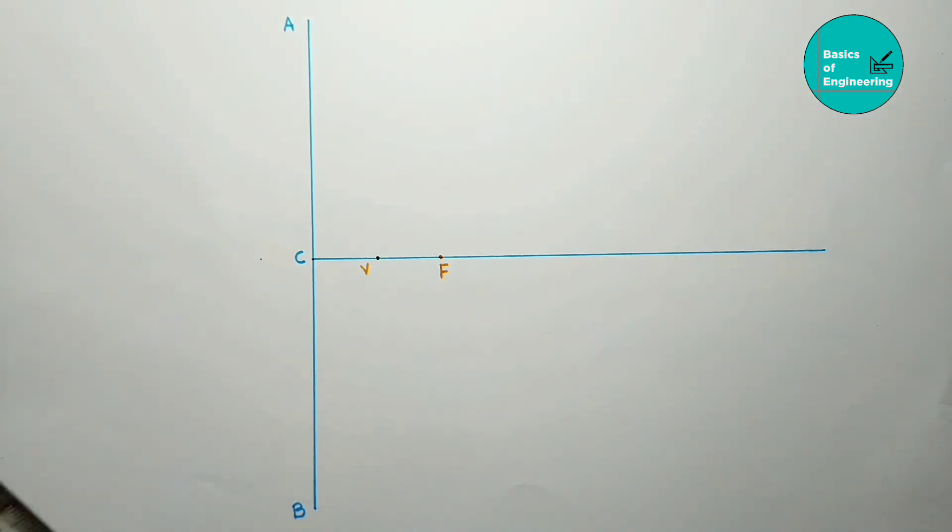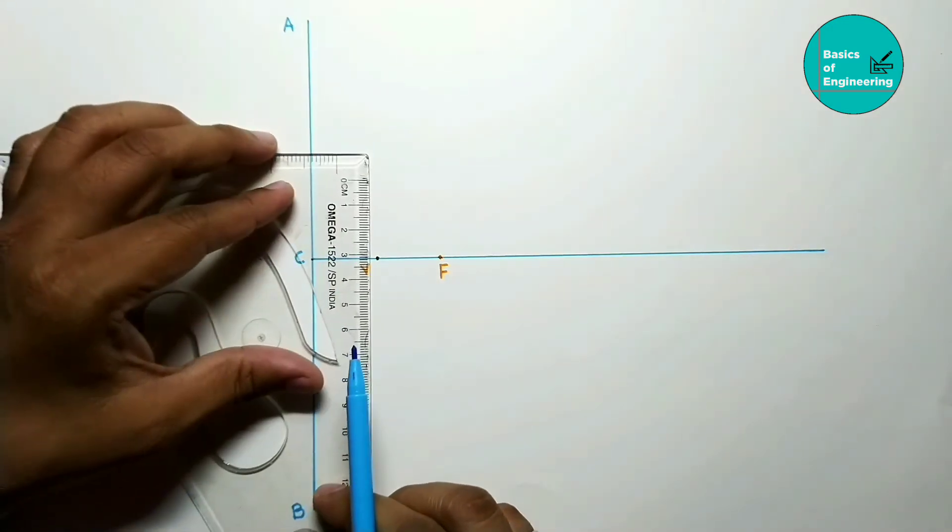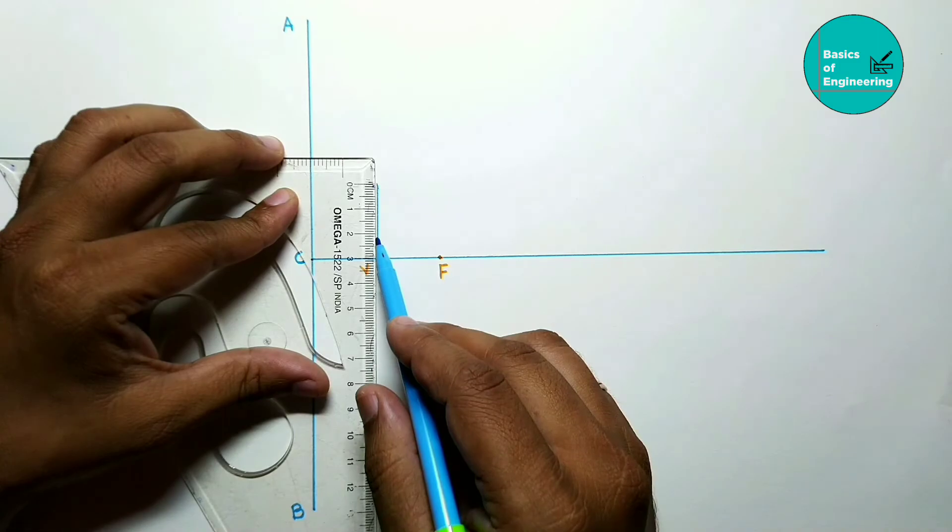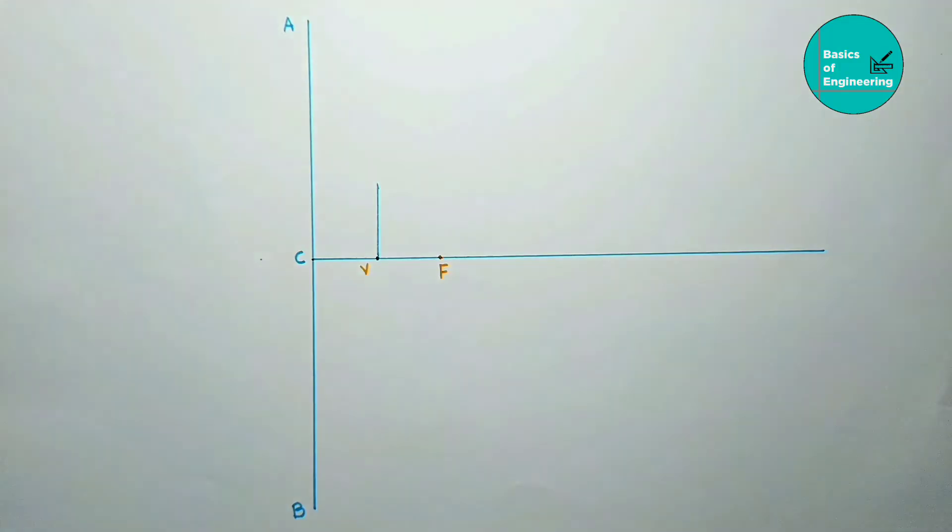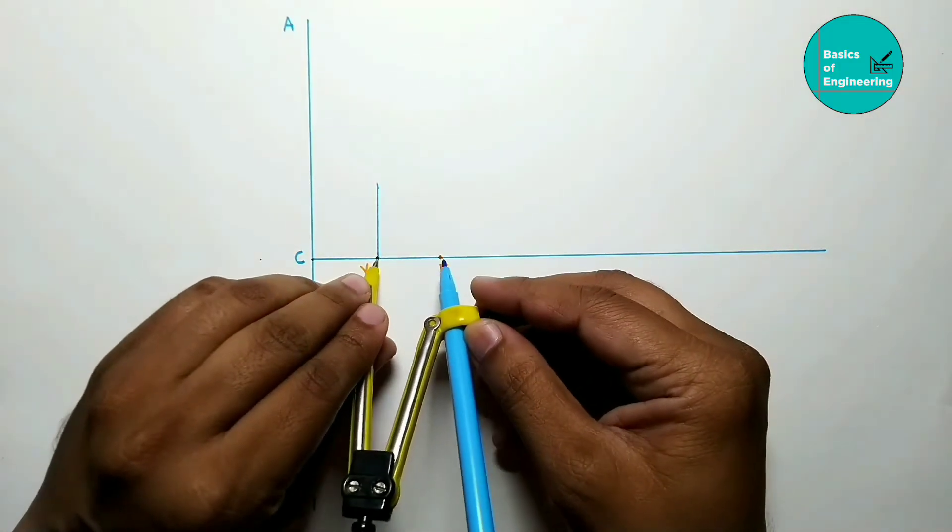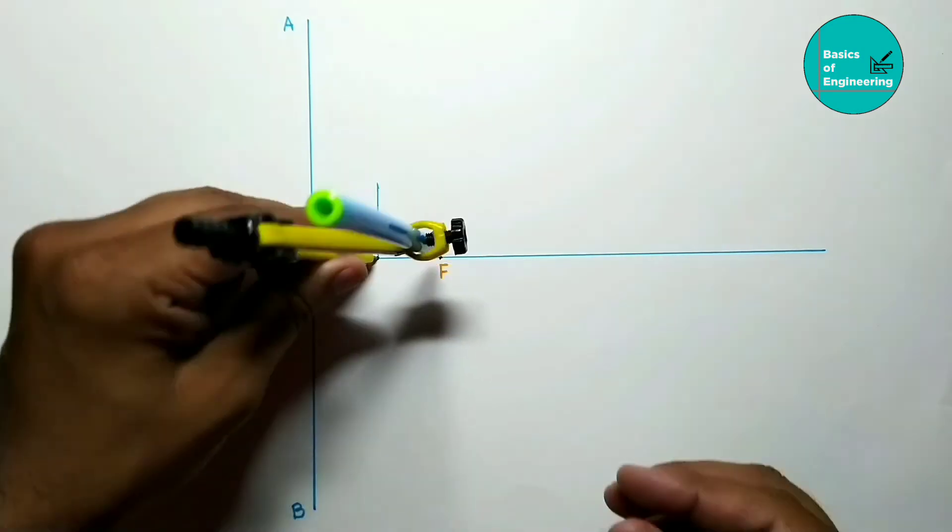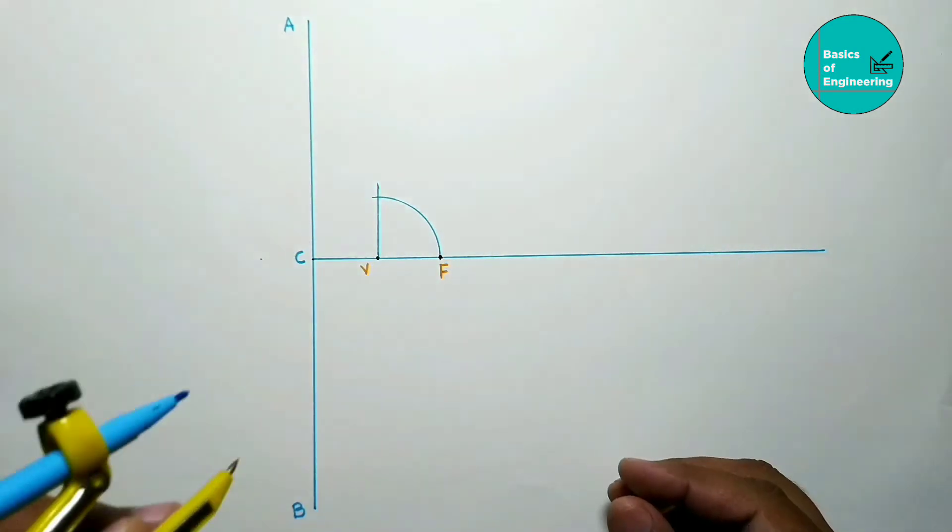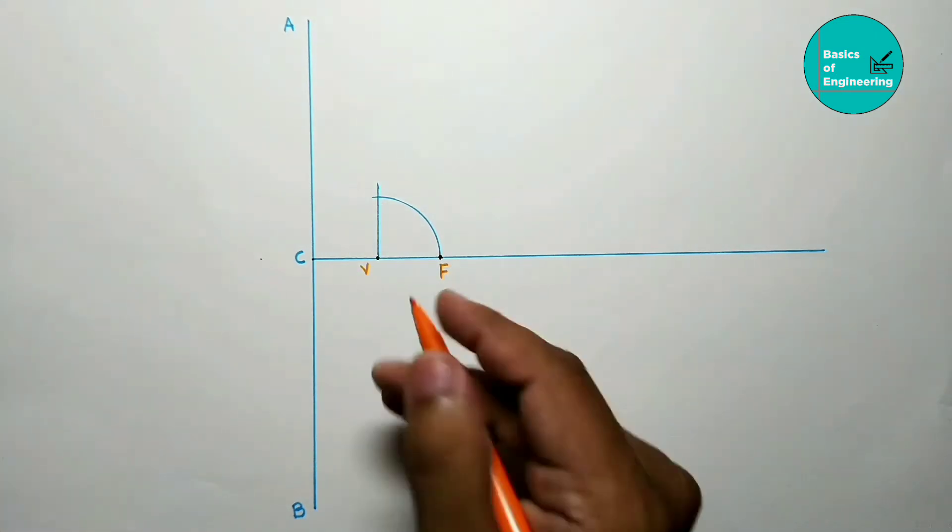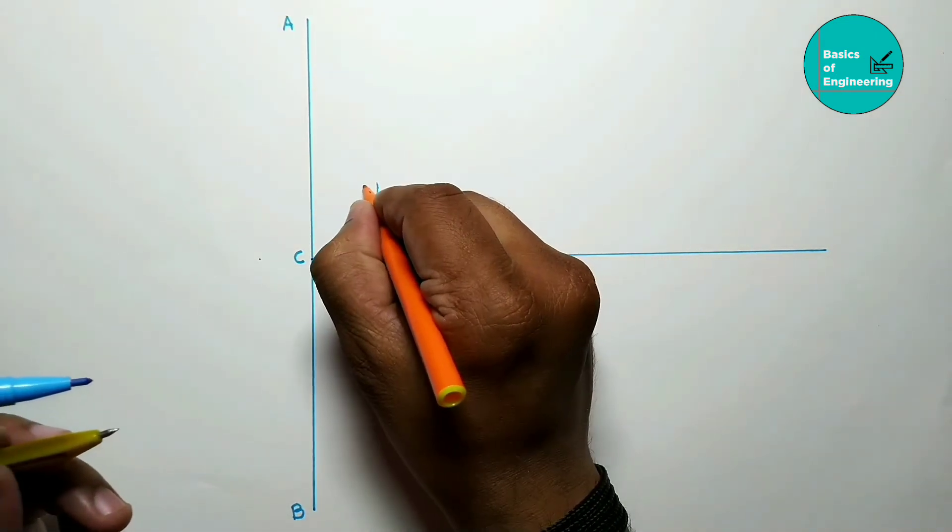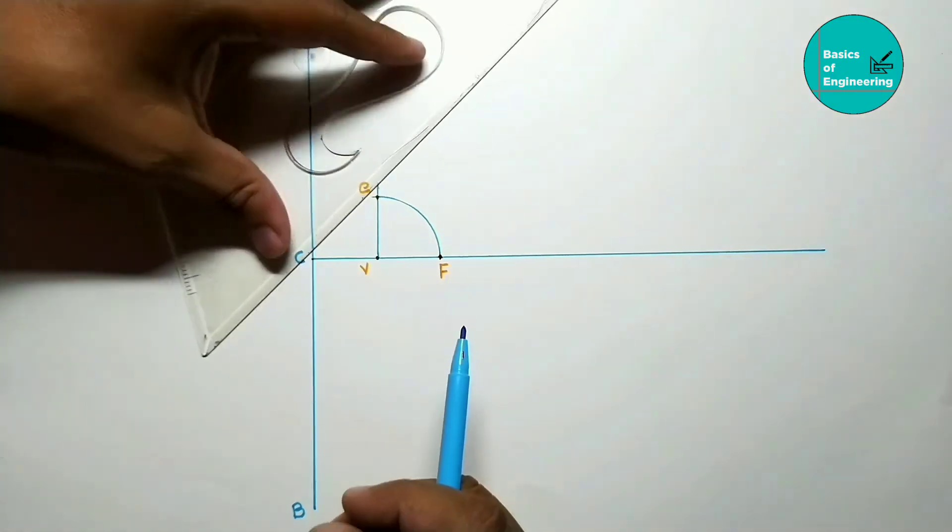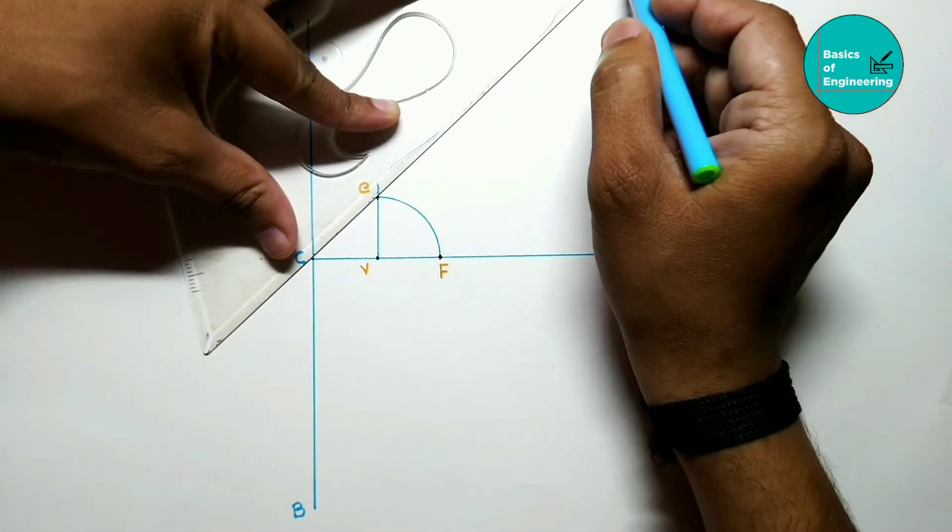Next step is to draw one vertical line from vertex. Take the compass, take the distance V to F, and mark the arc to intersect the vertical line. Give this line name as E, then join C to E and extend the line.